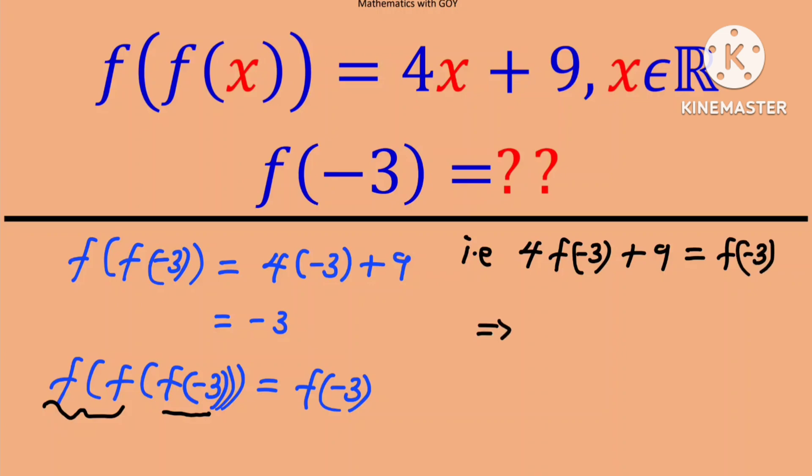And this implies that 3 times f of negative 3 is equal to negative 9. And therefore, f of negative 3 is equal to negative 3.